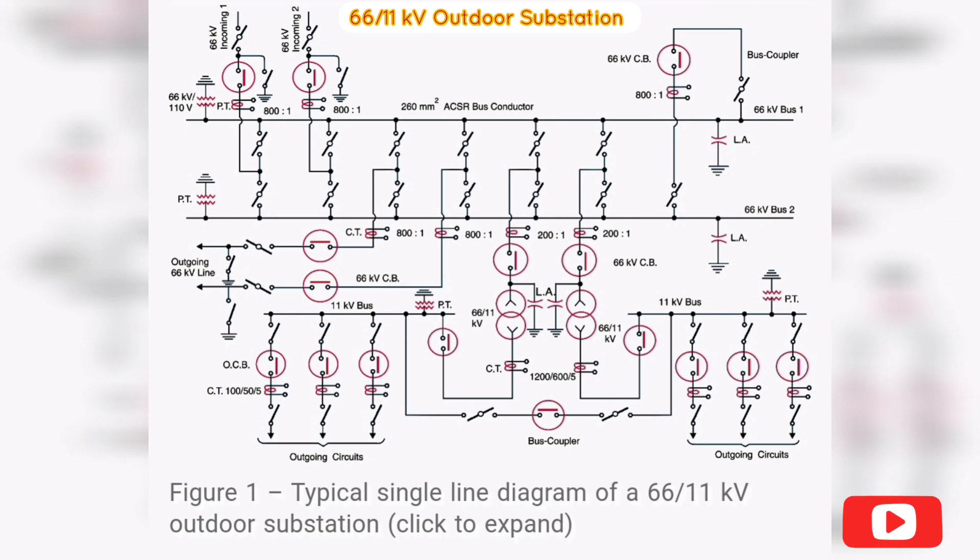Each incoming line is capable of supplying the rated substation load. Both lines can be loaded simultaneously to share the load, or any one line can be called upon to meet the entire load. The double circuit arrangement increases the reliability of the system. In case there is a breakdown of one incoming line, continuity of supply can be maintained by the other line.